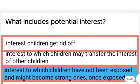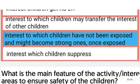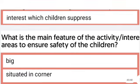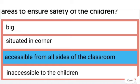What includes potential interest? The next one: What is the main feature of the activity interest area to ensure safety of the children? The right answer is accessible from all sides of the classroom.